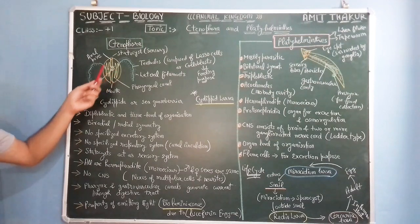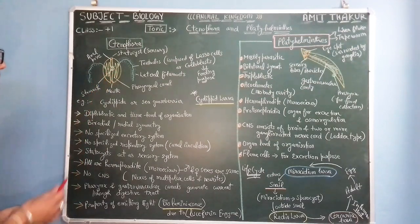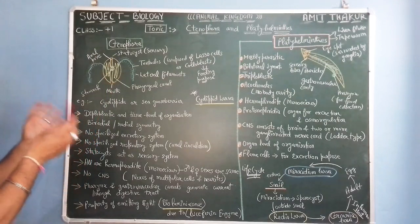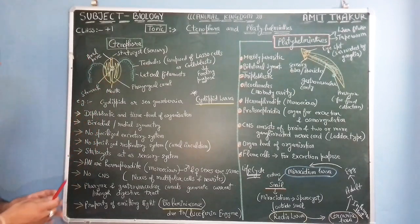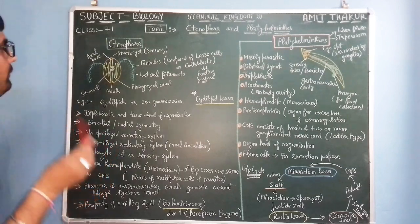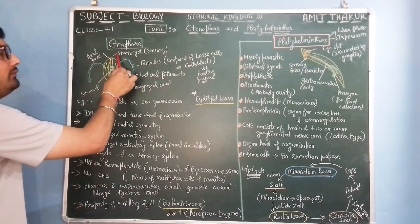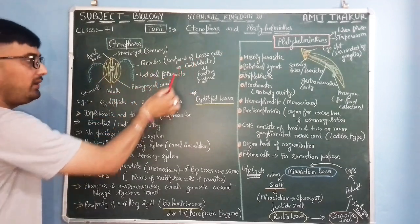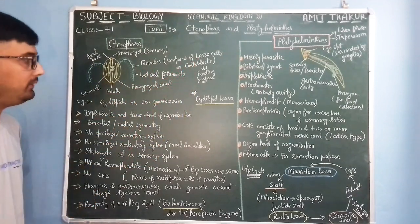Stomach is centrally arranged. Do not get confused with the structure of this Ctenophora, it is not very important. The important points are the statocysts which are sensory in nature, tentacles composed of lasso cells and colloblasts have feeding purpose.